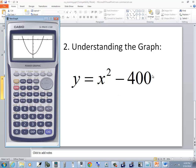Well, X-squared minus 400, when you've got a number at the end, it shifts it up or down. That negative 400 means it's been shifted down 400 units. That's why I knew I had to start way down there.